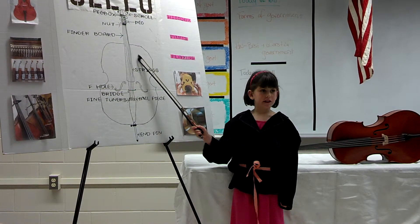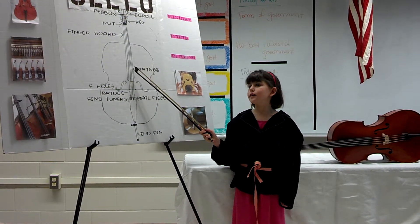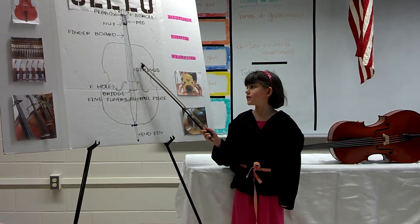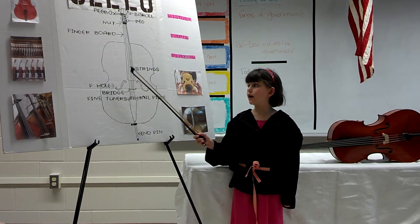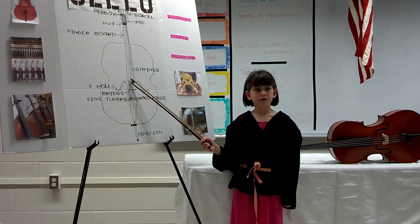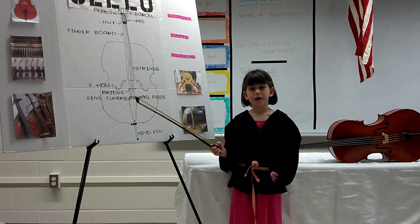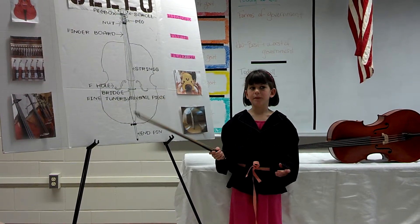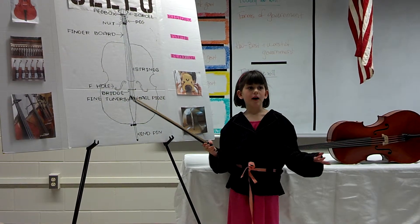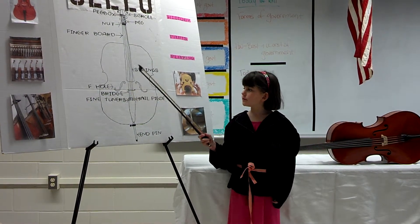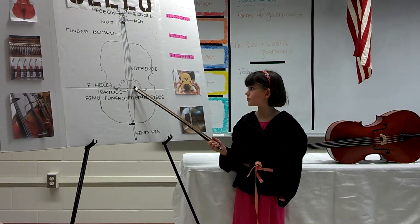We have the strings: A, D, G, and C. And the f-holes, which let the vibration out of the cello to make music. And the bridge.